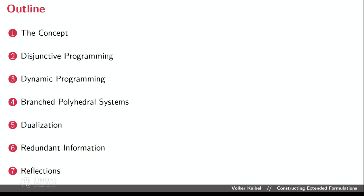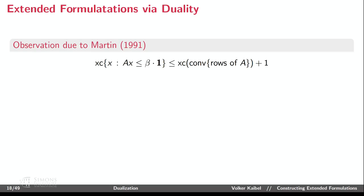Let's talk about the dualization technique, going back to Martin in the late 80s, published early 90s. The key observation is: for a polytope described by Ax ≤ β·1 (all right-hand sides equal to β), the extension complexity is bounded from above by the extension complexity of the convex hull of the rows of A plus one. The reason is LP duality: the condition Ax ≤ β·1 is equivalent to saying the maximum of a^T x over all convex combinations a of the rows of A is at most β.